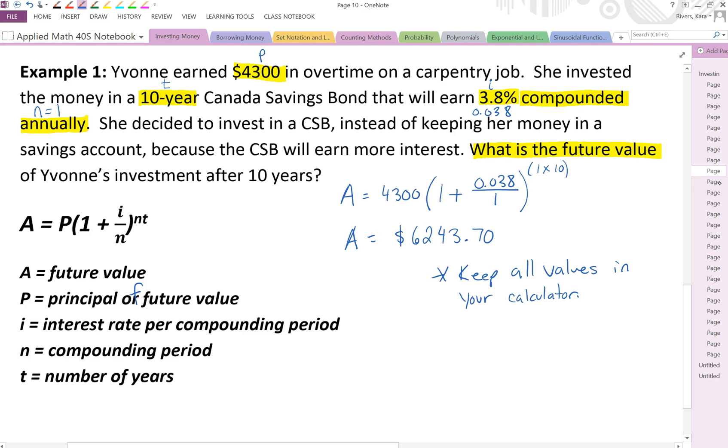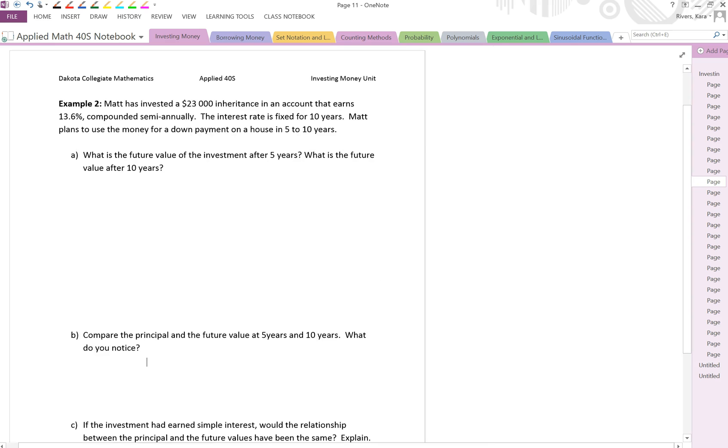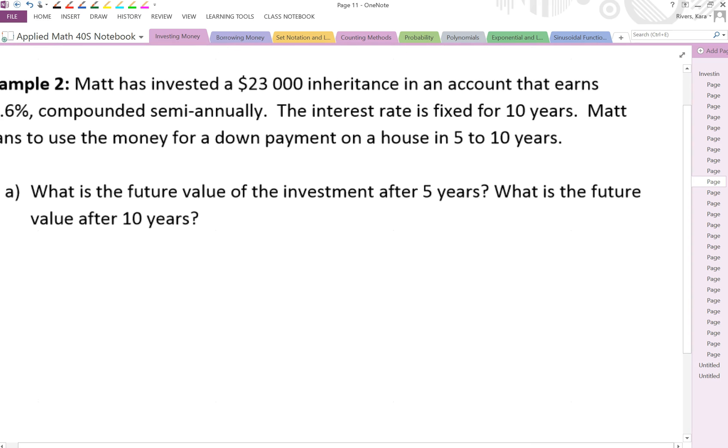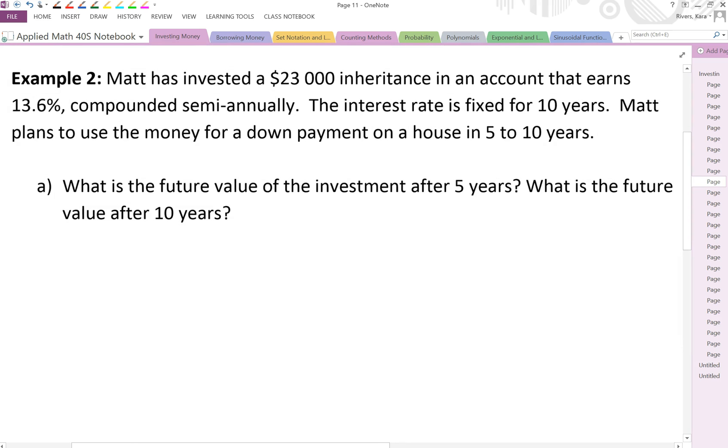Let's take a look at example 2. Matt has invested $23,000 inheritance in an account that earns 13.6% compounded semi-annually. The interest rate is fixed for 10 years. Matt plans to use the money for a down payment on a house in 5 to 10 years. What is the future value of the investment after 5 years? What is the future value after 10 years?